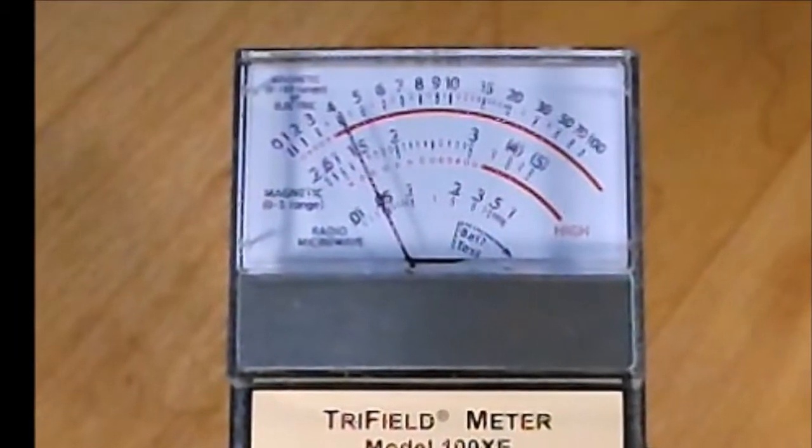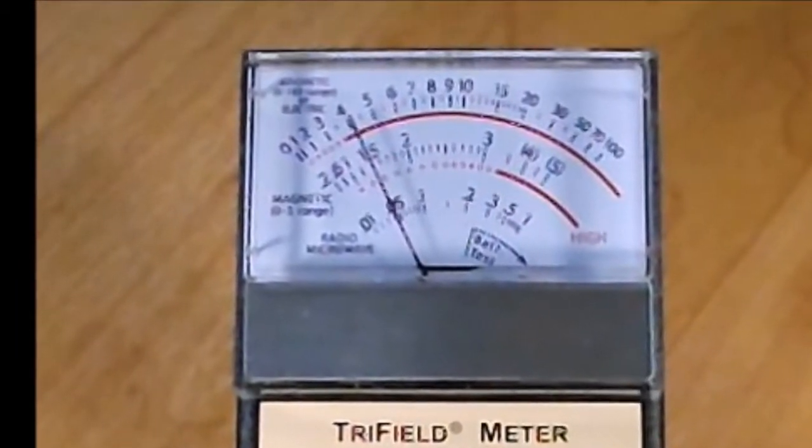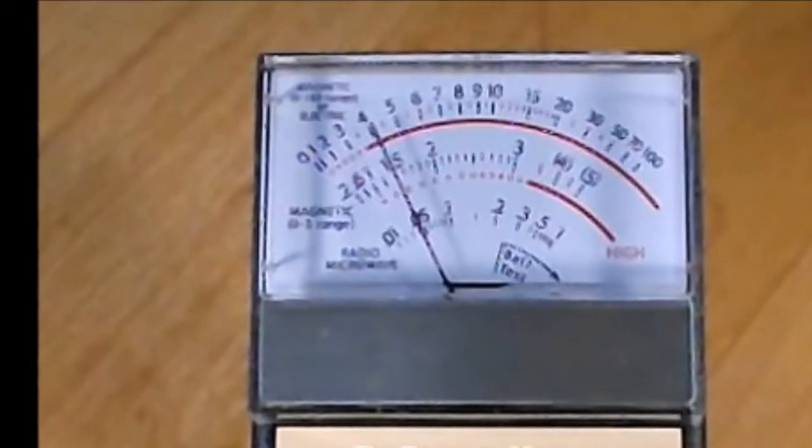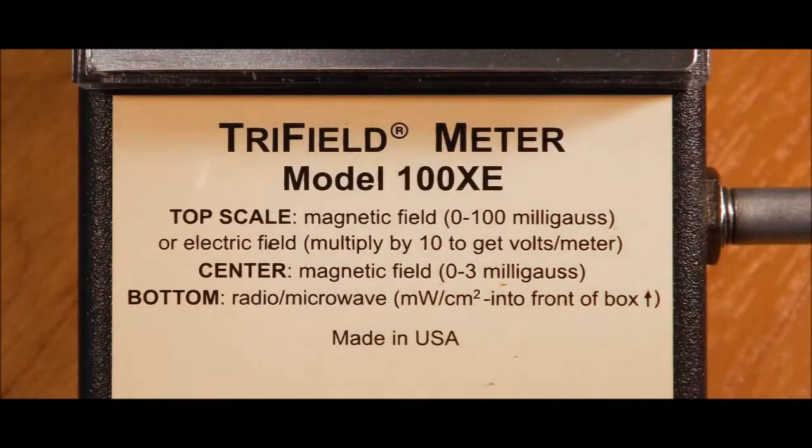So, for example, I have the knob set to magnetic 0 to 100. Looking at the top scale, the level reads about 4 milligauss. The units used are printed on the face of the meter.